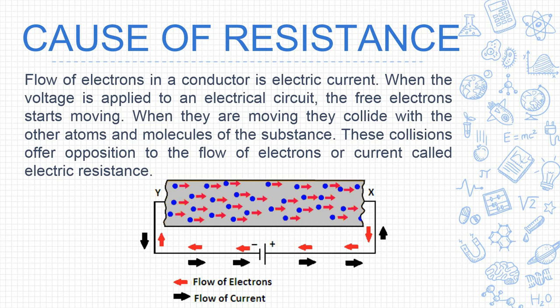These collisions offer opposition to the flow of electrons or current, which is called electrical resistance. So, when voltage is provided to the circuit, electrons flow inside the conductor and collide with atoms or molecules. These collisions create resistance, which opposes the flow of current.